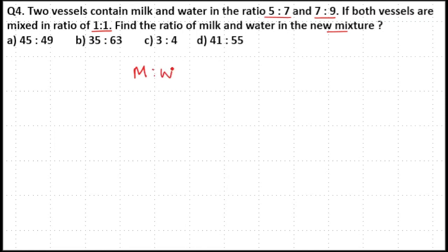Here, milk and water in the first vessel is in the ratio 5:7. In the second vessel, it's in the ratio 7:9. 5 plus 7 equals 12 parts. 7 plus 9 equals 16 parts. Both vessels are mixed in ratio 1:1, so multiply with 1 and 1.